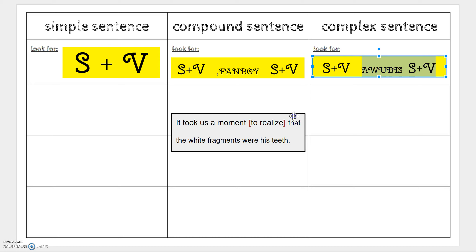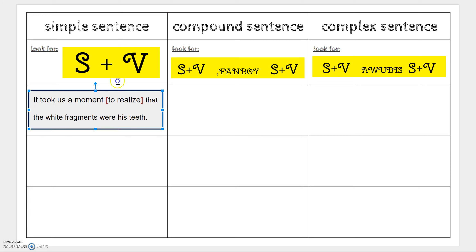Let's do one example: 'It took us a moment to realize that the white fragments were his teeth.' This is such a good book, if you ever want to read it. First, I'm going to eliminate phrases — 'to realize' is an infinitive, and that's all I see. I don't see a comma-FANBOY, so I know this is not compound. I'll move it over here because I know it's either simple or complex. If it's complex, I should find a subordinating conjunction — and since I don't have them memorized yet, I should have my notebook out. I see 'that' is a subordinating conjunction.